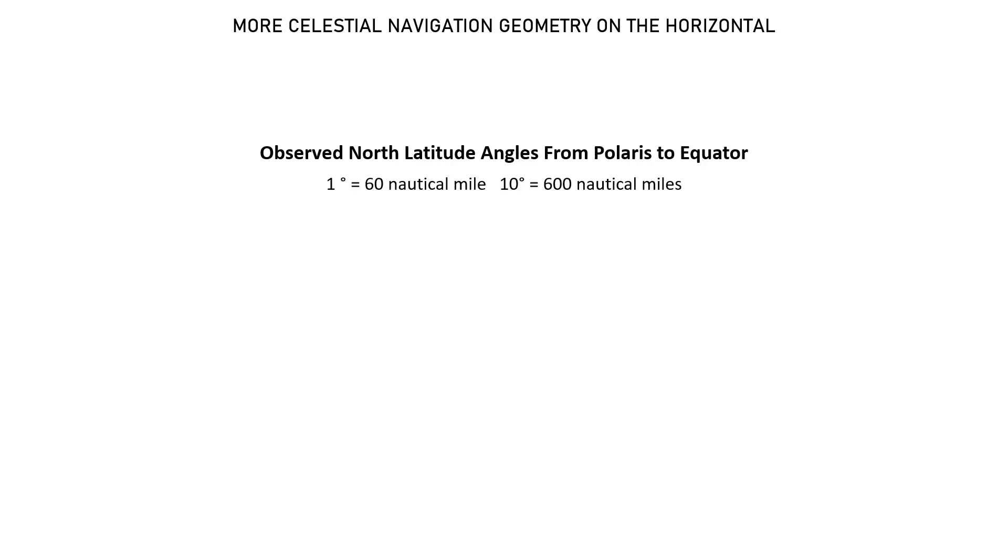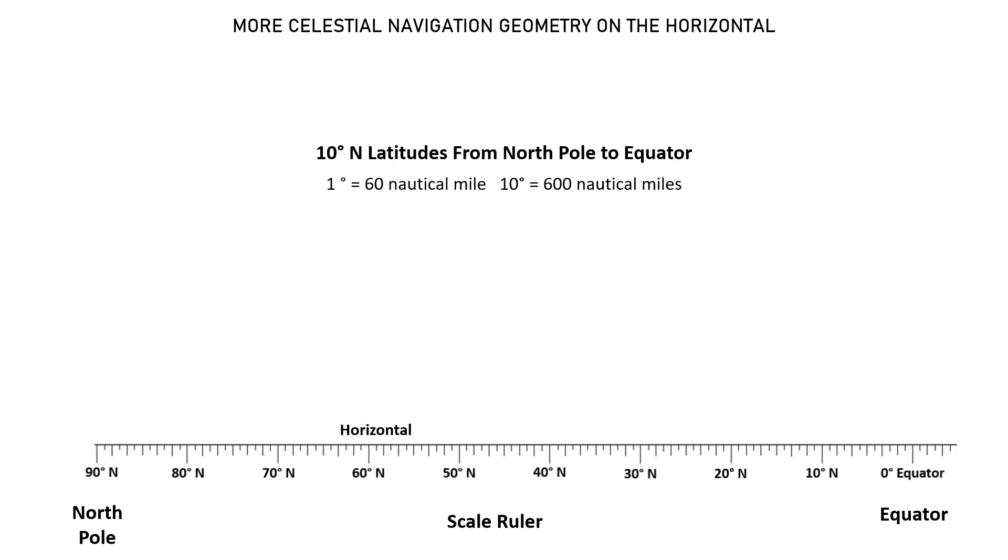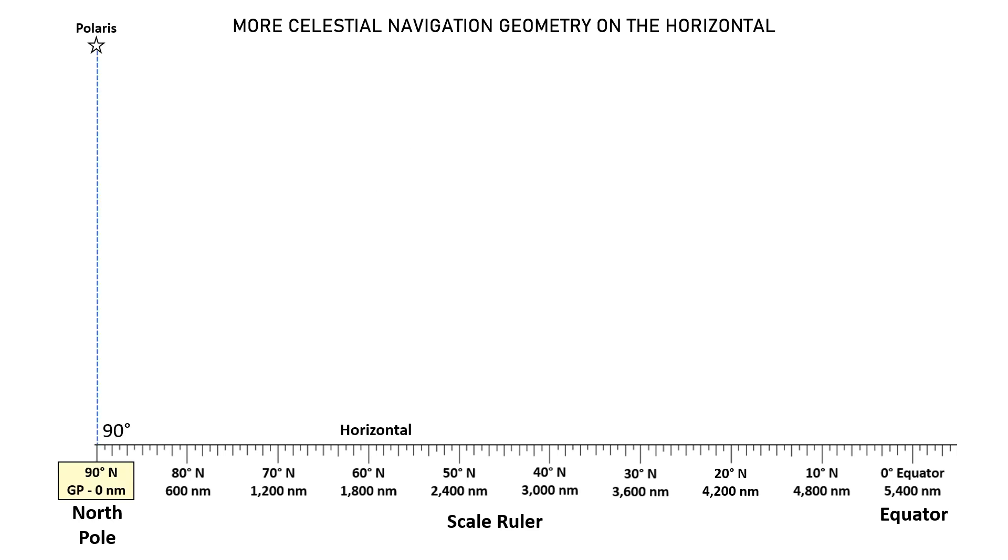Now this is something you could have easily drawn on your whiteboard, and we'll use 10 degrees equals 600 nautical miles. So your horizontal is a scale ruler, and that includes every 10 degrees of north latitude from the north pole down to the equator. Next, you add the appropriate distances starting at zero nautical miles at the north pole.